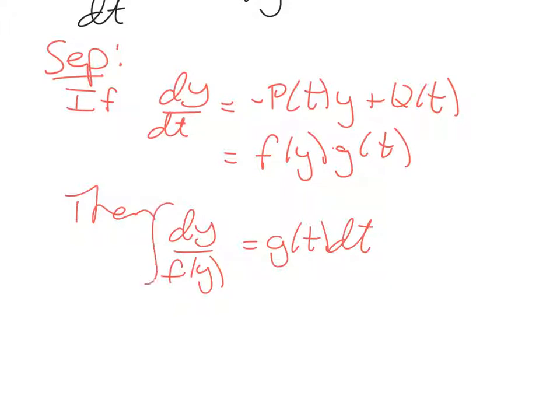Then you can separate the variables dy over f of y equals g of t dt. You can then integrate both sides and you're off and rolling. Now the integration might actually be quite challenging and that's perfectly okay. But the key that you're looking for here is if you can actually separate the variables on the right hand side then it's separable. Hence the name is pretty obvious.